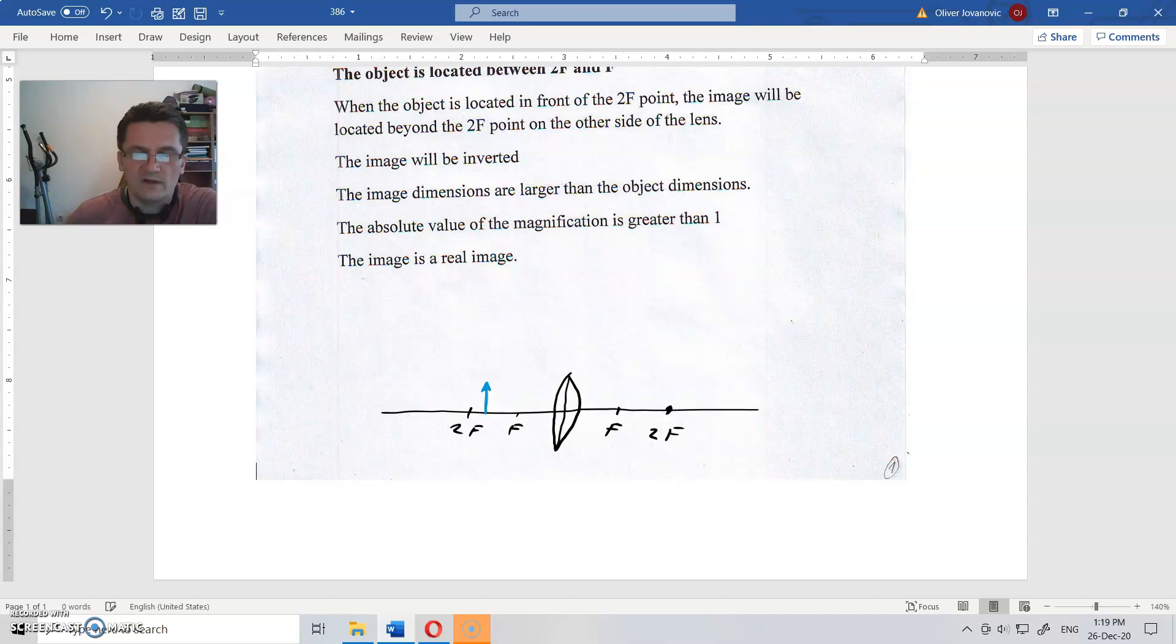Now we have three rays to choose in order to make an image. First one comes from the top of the object.